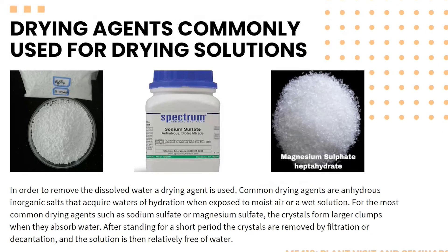These are the drying agents commonly used for drying solutions — examples include anhydrous inorganic salts, sodium sulfate, and magnesium sulfate. A drying agent is used to remove dissolved water. Common drying agents are anhydrous inorganic salts that acquire waters of hydration when exposed to moist air or a wet solution. For sodium sulfate or magnesium sulfate, the crystals form larger clumps when they absorb water; after standing for a short period, the crystals are removed by filtration or decantation and the solution is then relatively free of water.